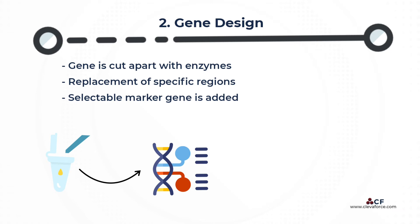A selectable marker gene, which usually confers antibiotic resistance, is added to make it easier to determine which cells have been successfully transformed. The gene can also be modified at this stage to improve expression or effectiveness. These manipulations are carried out using recombinant DNA techniques, such as restriction digests, ligations, and molecular cloning.